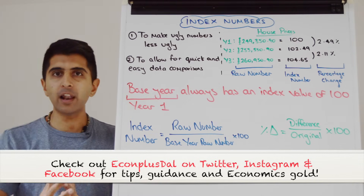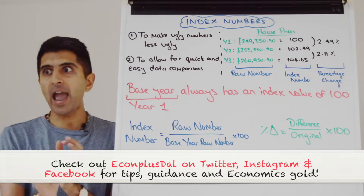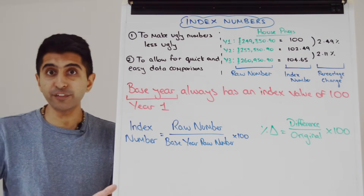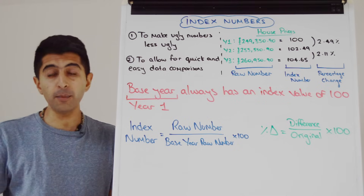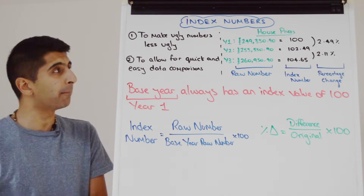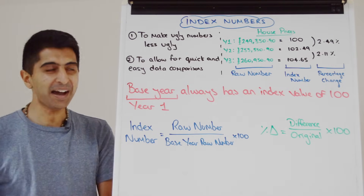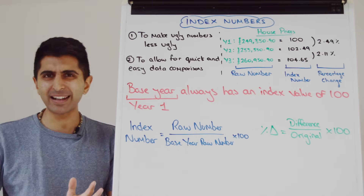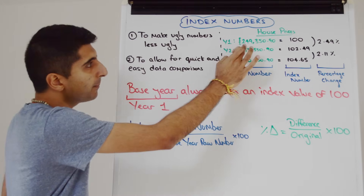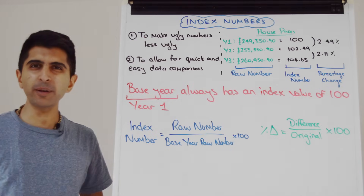Let's look at two reasons why we like index numbers in economics. In economics, there are a heck of a lot of ugly numbers. Look at GDP — GDP could be 12 numbers long, and with decimal places even longer than that. That is a horribly ugly number. So to make ugly numbers less ugly, you can simplify them. There are so many ugly numbers, just like 249350.9. What a horrible number that is.